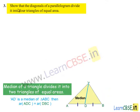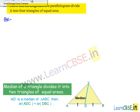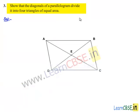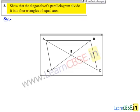Coming to the third question: show that the diagonals of the parallelogram divide it into four triangles of equal area. Moving on to the solution. Let us consider a parallelogram ABCD whose diagonals are AC and BD respectively, which are intersecting at point E.